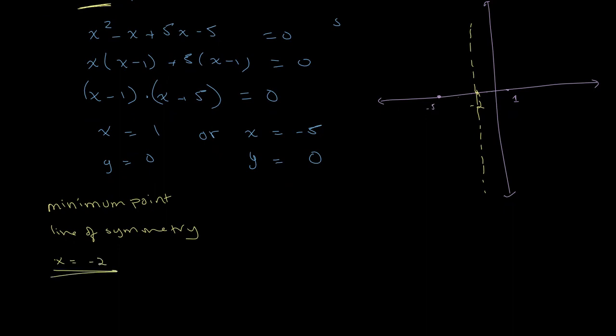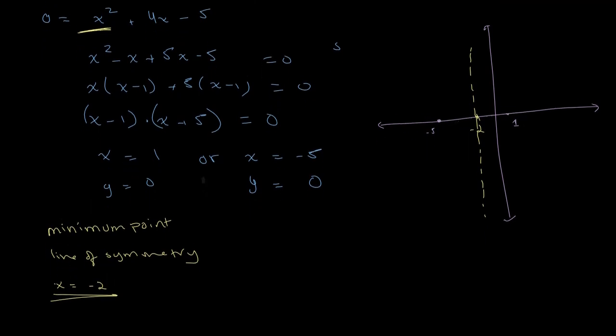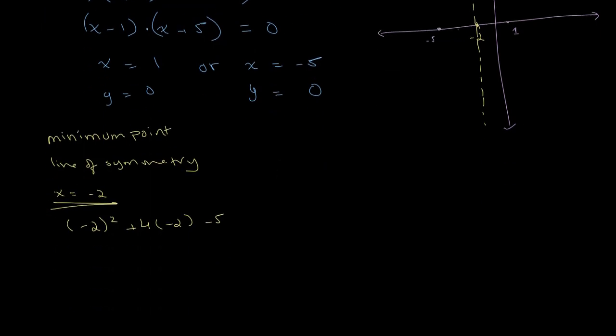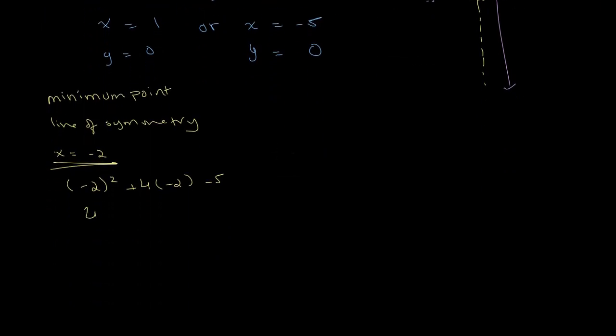And this is the point at which our minimum point is. So we plug in minus 2, minus 2 squared, plus 4 times minus 2, minus 5, plugging this back into our equation. From this, we get 4 minus 8 minus 5, which gives us an answer of negative 9.